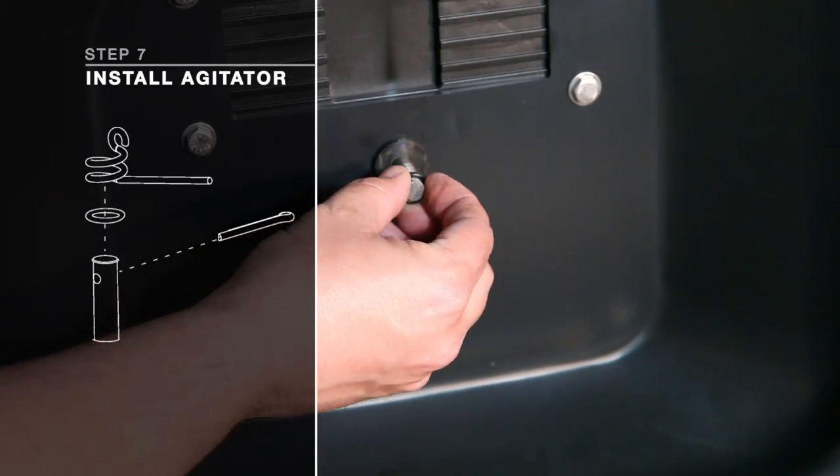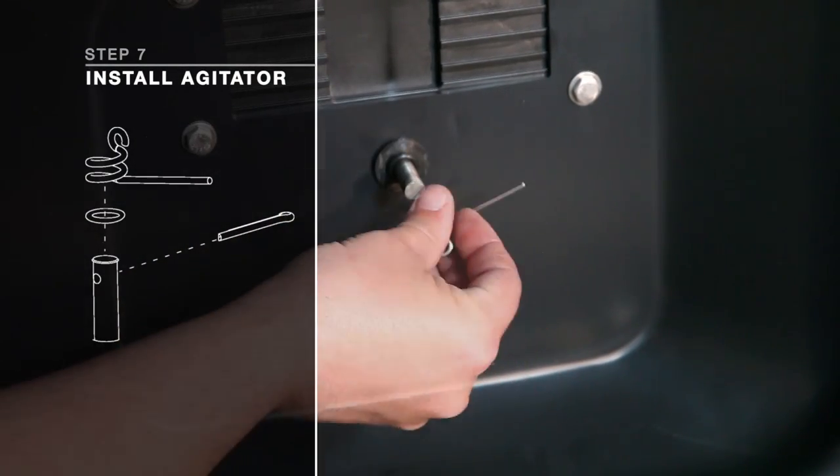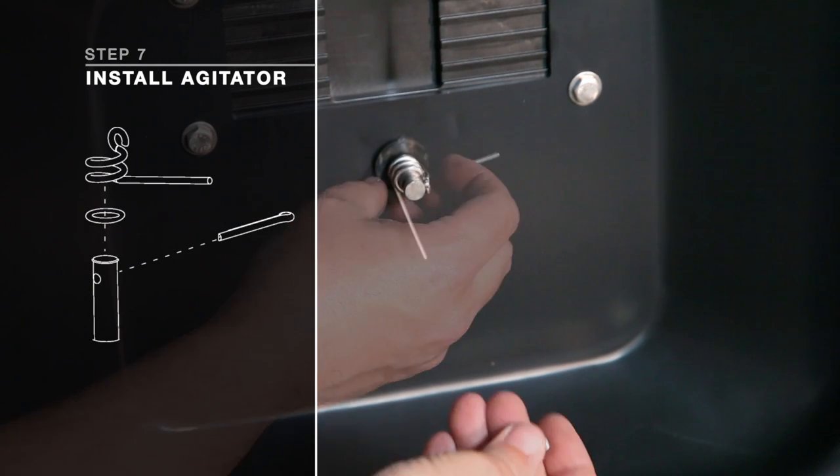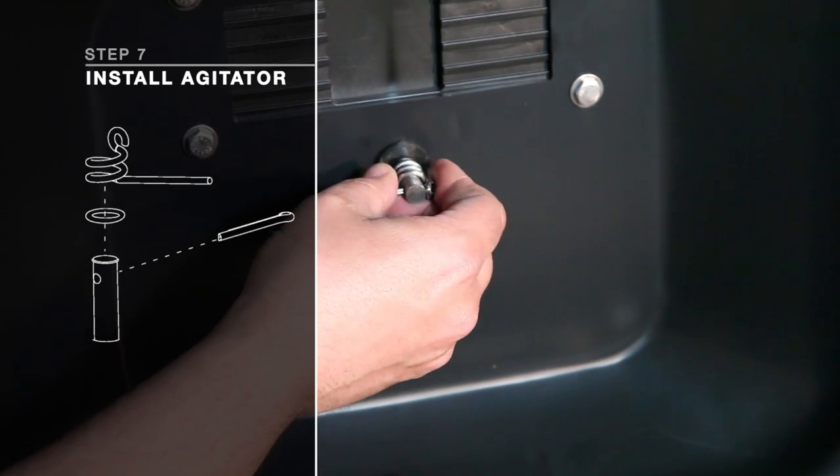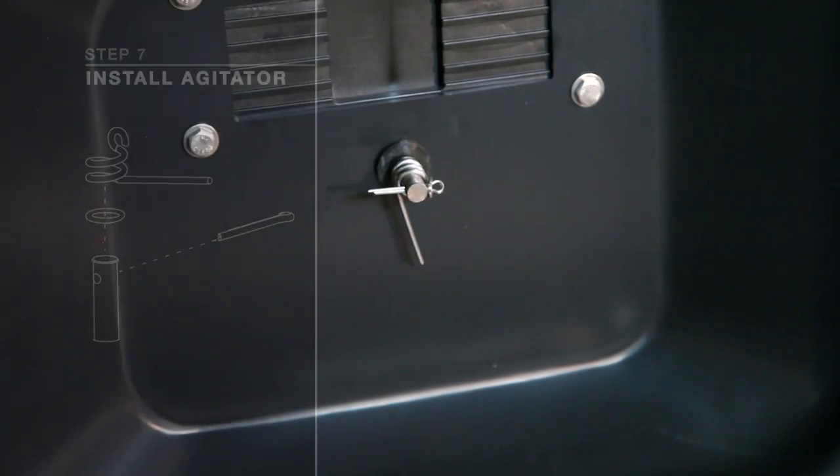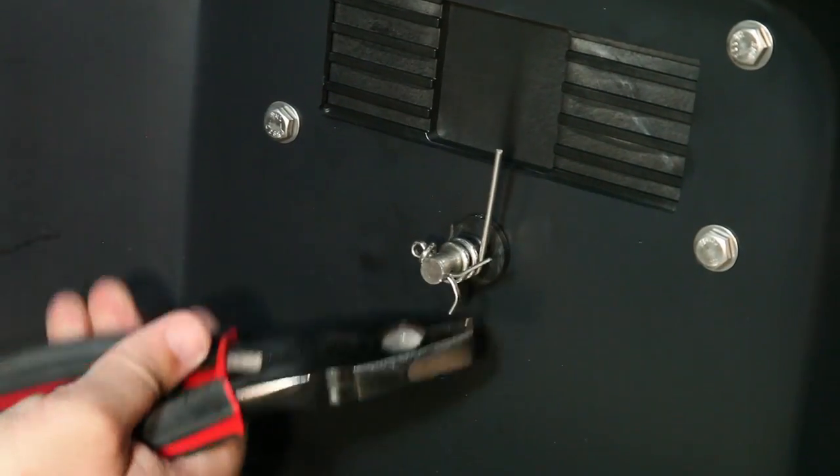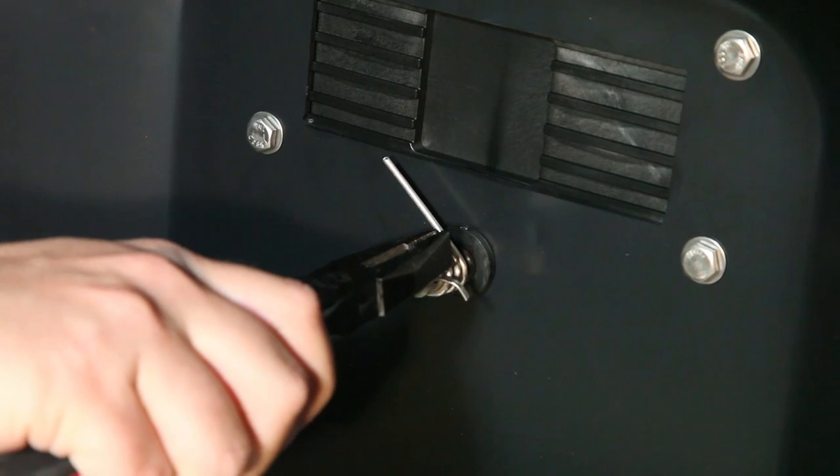Slide down O-ring number 20 and agitator spring number 20 over transmission shaft. Insert cotter pin number 18 through hole at the top of the transmission shaft. Flare the ends of the agitator spring to keep in place.